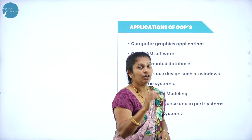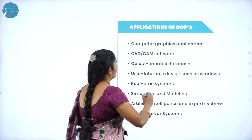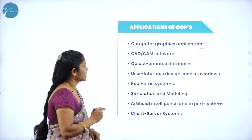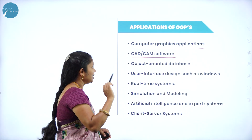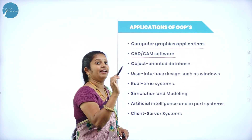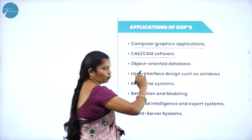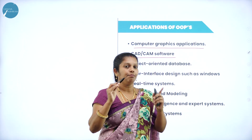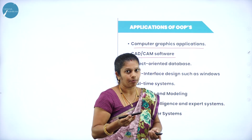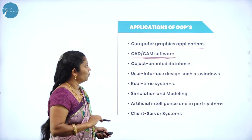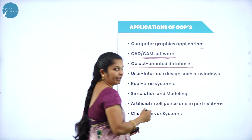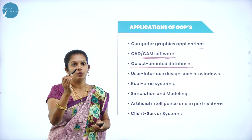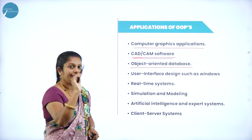The application of Hoops is where exactly we are using this concept. Hoops is used in computer graphic applications. It is also used in CAD and CAM software — CAD means Computer Aided Designing software, and CAM means Computer Aided Manufacturing. For example, if I want to design or release some product, we use CAD and CAM software. It is also used in object oriented database — if I want to maintain large amounts of data in a systematic manner, we use the Hoops concept there.